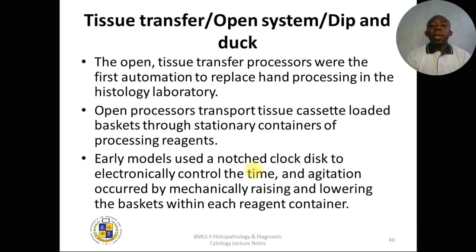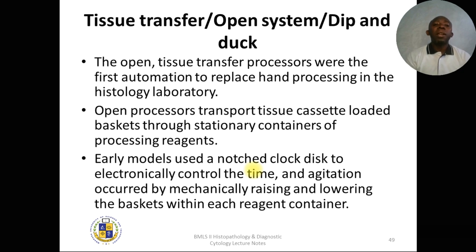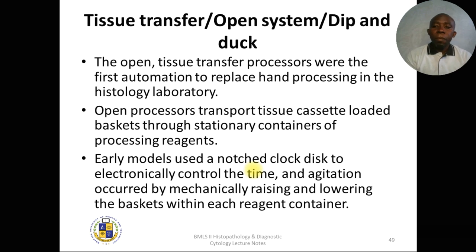The types of tissue processors include what is called the tissue transfer, open system, or deep-and-dark tissue processor. In this type, the tissue is transferred from one container to another. This was the first automation that replaced manual processing in histology laboratories.